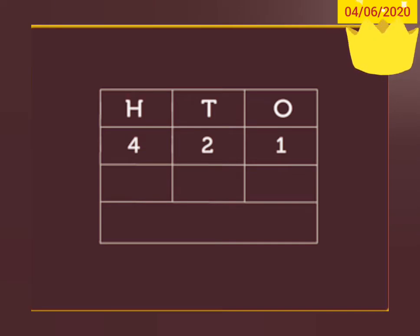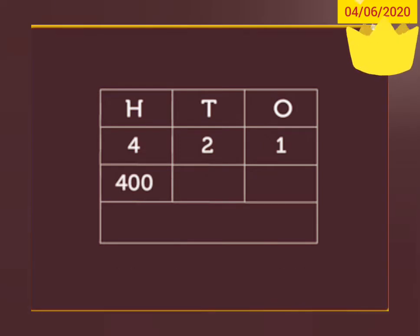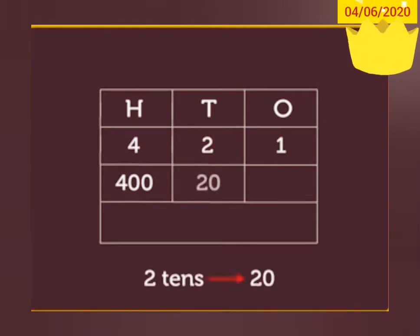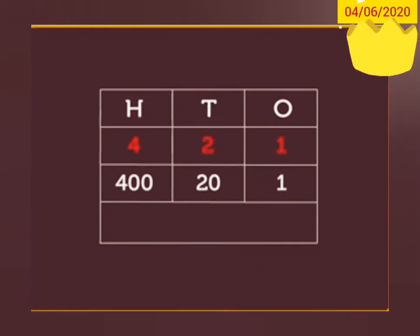Hence, the place value of digit 4 is 4 hundreds, which is equal to 400. The place value of digit 2 is 2 tens, which is equal to 20. And finally, the place value of digit 1 is 1 one, which is equal to 1. Now let us write this number as the sum of the place values of its digits.